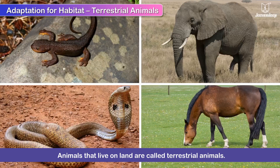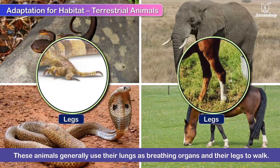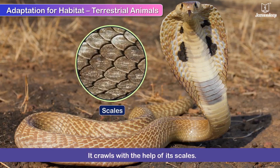Animals that live on land are called terrestrial animals. These animals generally use their lungs as breathing organs and their legs to walk. A snake lives on land but it does not have legs — it crawls with the help of its scales.